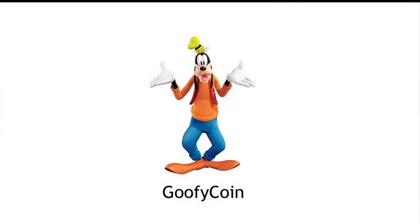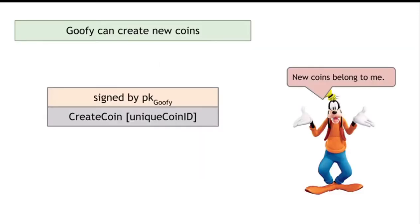Goofy coin is about the simplest cryptocurrency we can imagine. There are just a couple rules of Goofy coin. The first rule is that Goofy can create new coins whenever he wants, and when he makes a new coin it belongs to him. When Goofy makes a coin it's represented by a data structure with the create coin operation, a unique coin ID, and a digital signature put on it by Goofy which anyone can verify. New coins belong to Goofy by definition because those are the rules that Goofy made.